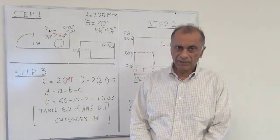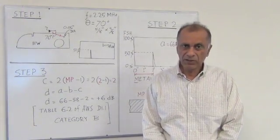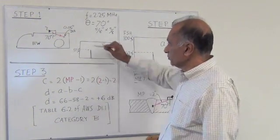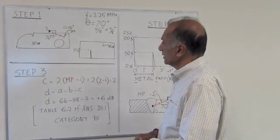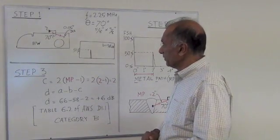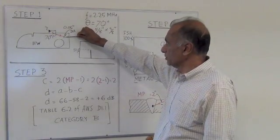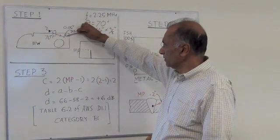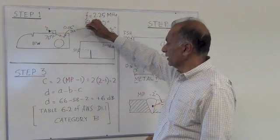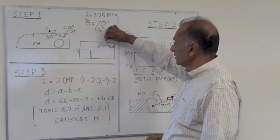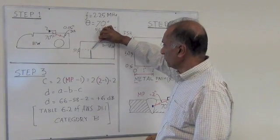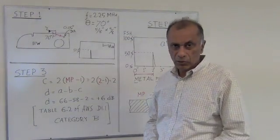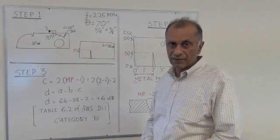Once we have all the equipment to do the inspection, then we need an IIW block to establish the calibration sensitivity. The calibration sensitivity is established on that 0.06 inch hole. The signal from the 0.06 inch hole is set to 50% screen height or full screen height, and the gain is noted. This is called the gain B.